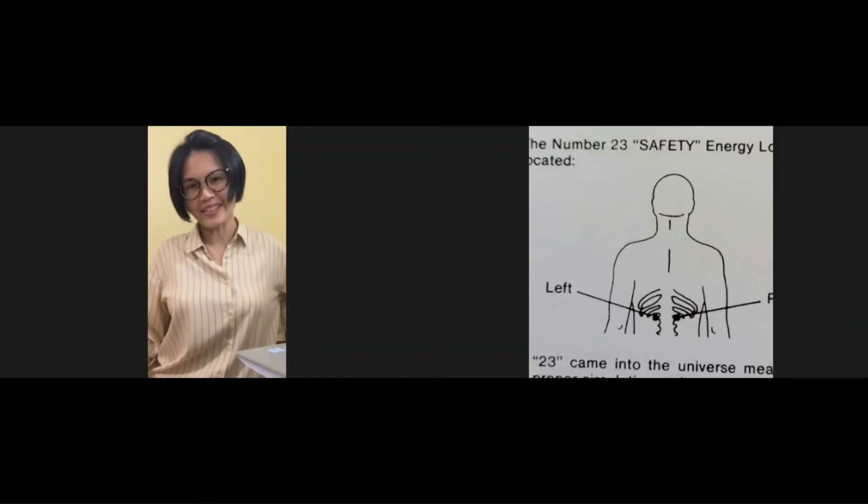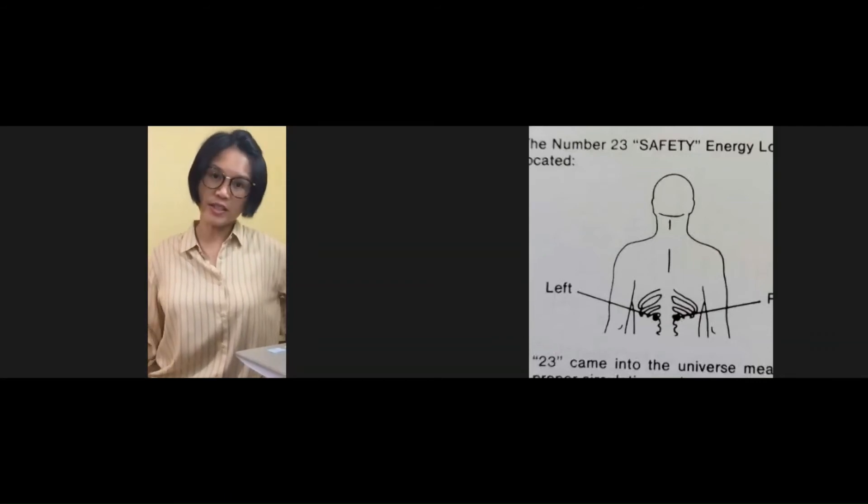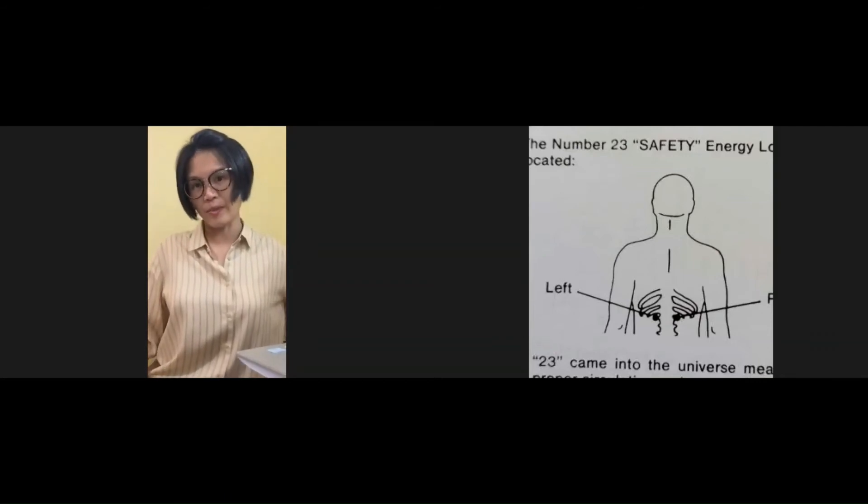Safety energy lock 23 is located at the back and is the controller of my destiny. It helps the circulation function of the body, the blood circulation.